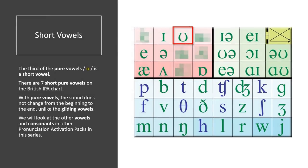The third of the pure vowels is a short vowel. There are seven short pure vowels on the British IPA Chart. With pure vowels, the sound does not change from the beginning to the end, unlike the gliding vowels. We will look at the other vowels and consonants in other pronunciation activity packs in this series.